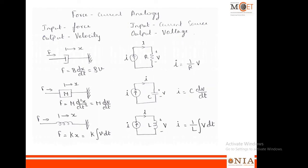In force-current analogy, if the input is force in the mechanical translation system, then the input in the electrical system is current. So force is equated to current and the output velocity is equated to output voltage. The expressions we write now should be current expressions for resistor, capacitor, and inductor. Force equated to current means velocity is equated to voltage, and therefore damper B is equivalent to 1/R.